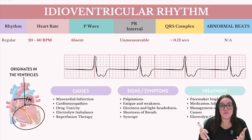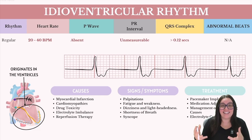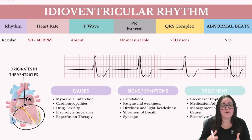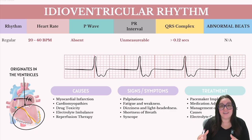We're going to start with idioventricular rhythms, characterized by their slow, regular rhythm that originates from our ventricles. We typically call these the dying heart rhythms because they're predominantly seen in patients who are on palliative care for end-of-life services. This rhythm is ultimately going to be lethal if it is not intervened because of its slow heart rate.